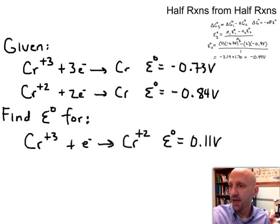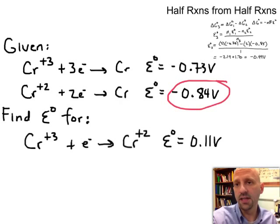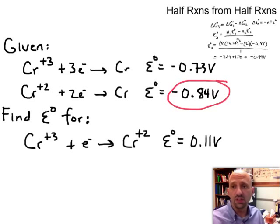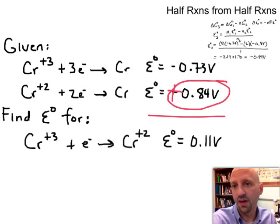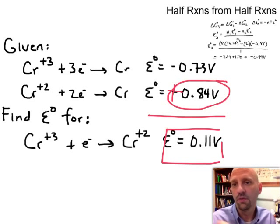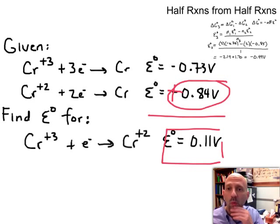And of course when you do that, what you would anticipate on doing is taking the negative 0.84 volts here and simply flipping it to positive 0.84 volts. And if you do that, you would find that you get the number I have there, 0.11 volts.